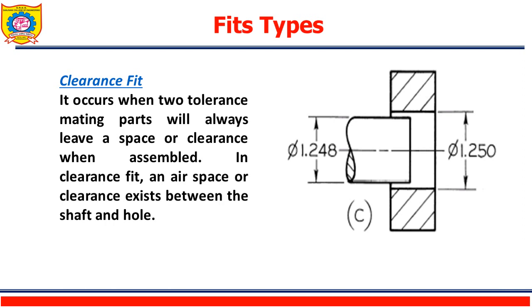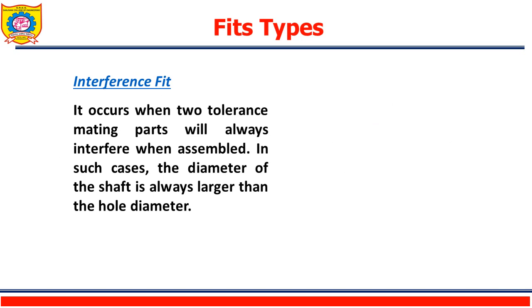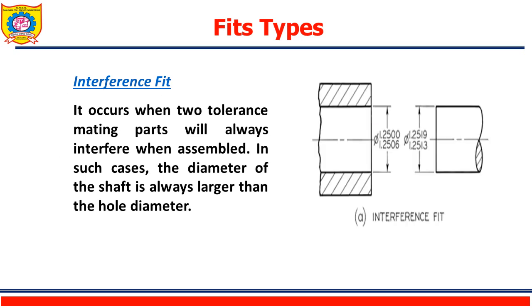The next type of fit is interference fit. It occurs when two toleranced mating parts will always interfere when assembled. This means the hole size is less and the shaft size is more. The diameter of the shaft is always larger than the hole diameter. From the figure it is clear that when the shaft size is more than the hole size, there exists an interference fit.